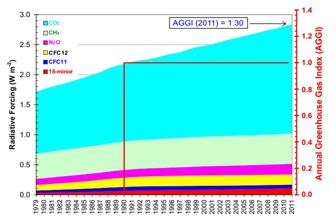Greenhouse gas intensity is a ratio between greenhouse gas emissions and another metric, e.g., gross domestic product or energy use. The terms carbon intensity and emissions intensity are also sometimes used. Emission intensities may be calculated using market exchange rates (MER) or purchasing power parity (PPP). Calculations based on MER show large differences in intensities between developed and developing countries, whereas calculations based on PPP show smaller differences.